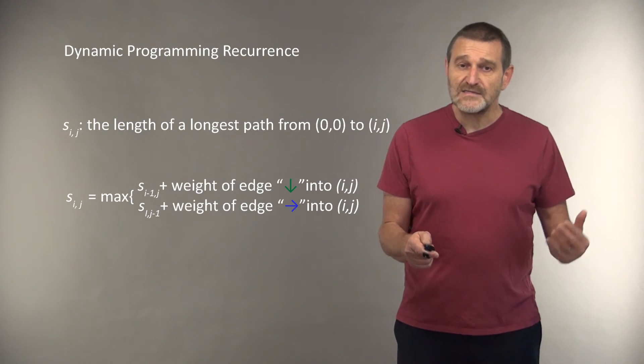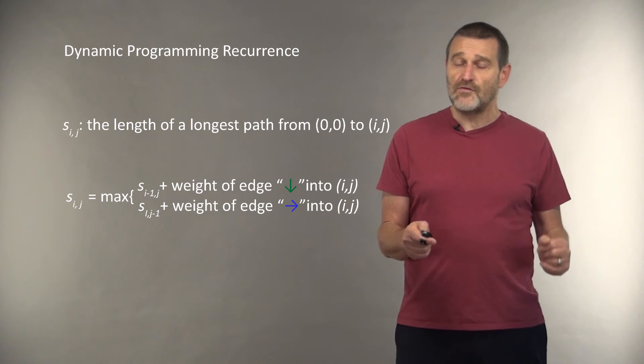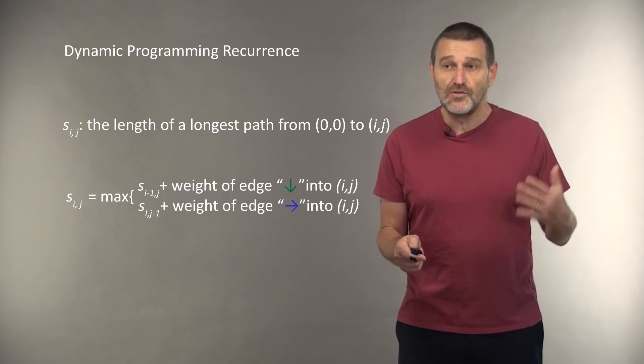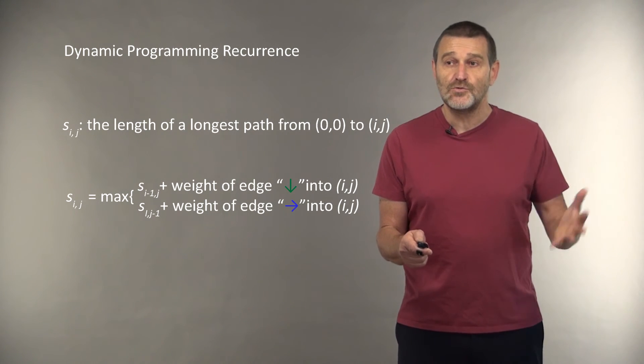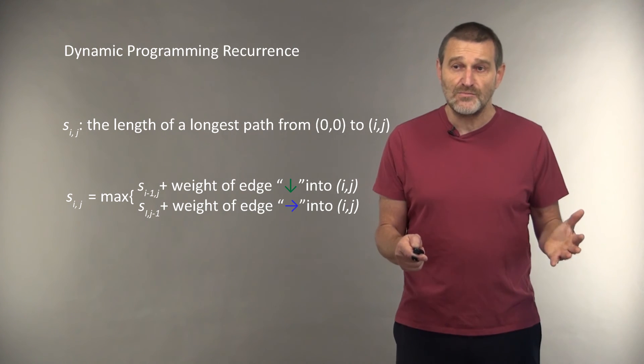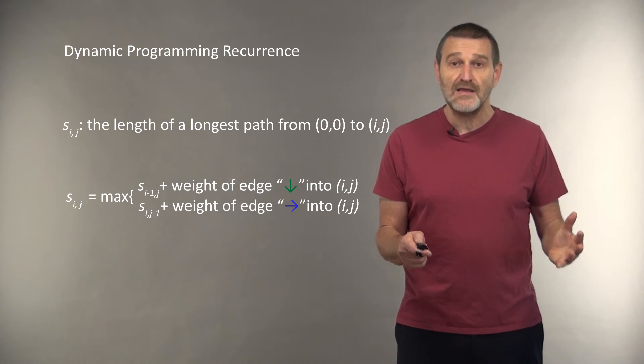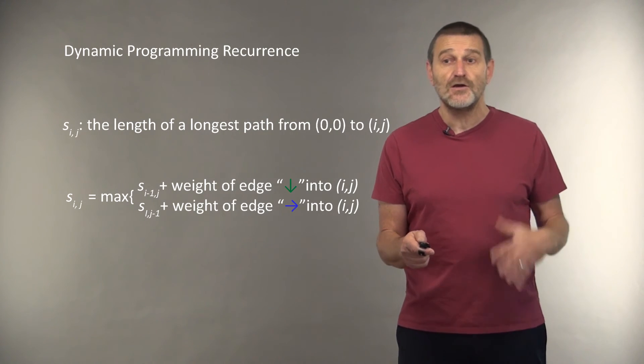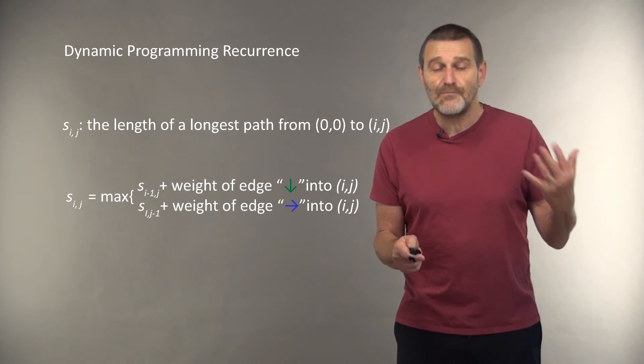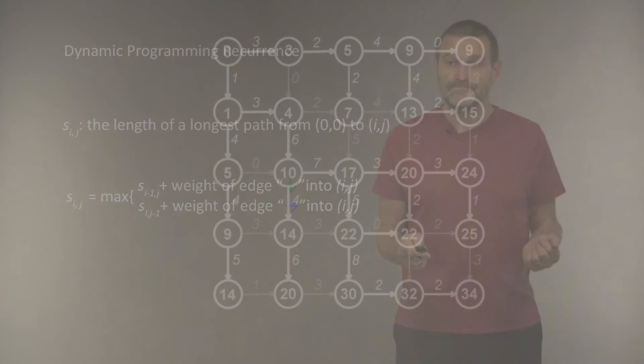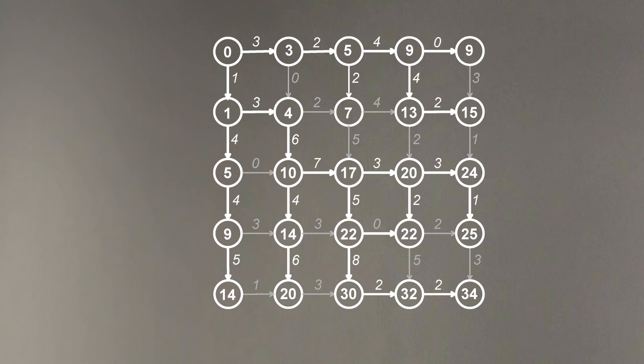Therefore, the recurrency for computing the longest path is the following. We define S(i,j) as the length of the longest path from initial node to (i,j). And S(i,j) is simply the maximum of S(i-1,j) plus the weight of the vertical edge, or S(i,j-1) plus the weight of the horizontal edge. And after we finish this dynamic programming procedure, we will fill the value of longest paths for every node. And we will learn that the optimal path to the final destination has length 34.